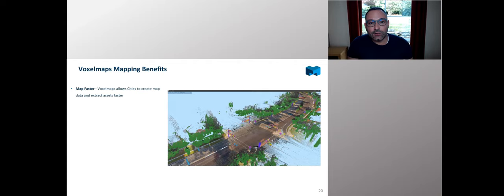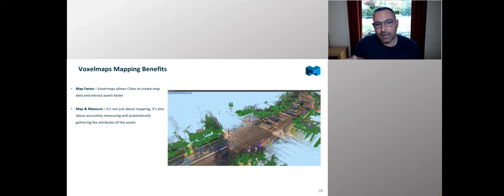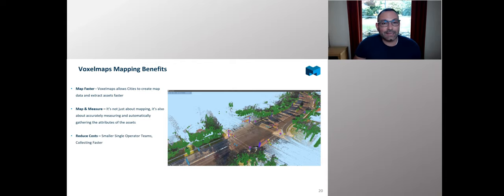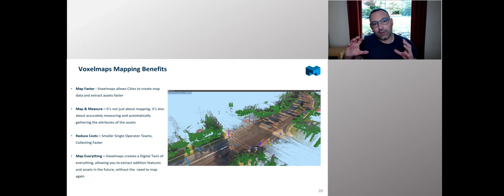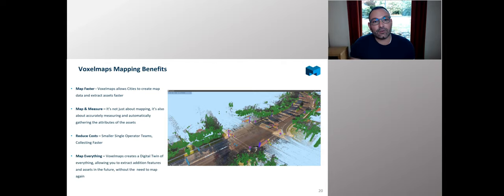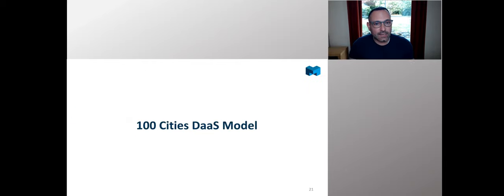To summarize the benefits: using the technology allows organizations to map much, much quicker than traditional approaches — not just mapping, but also measuring and taking back features that are important around those assets. Because of how we deploy the technology using single-operator teams, it really reduces the cost in terms of operations. And because you're building a full voxel map of everything you see, it's not just one or two assets you initially might be interested in — you have the ability to go into the data later and pull back any additional features you might need.